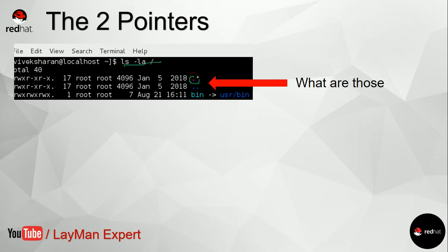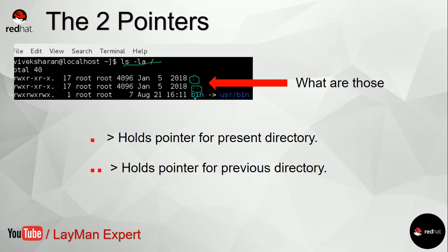Earlier I showed you the output of the ls command. Notice that in every directory — whether root, bin, or one you created — there are two dots. What are these two dots? They are actually pointers. The single dot holds the pointer to the present directory, and the double dot holds the pointer to the parent directory.